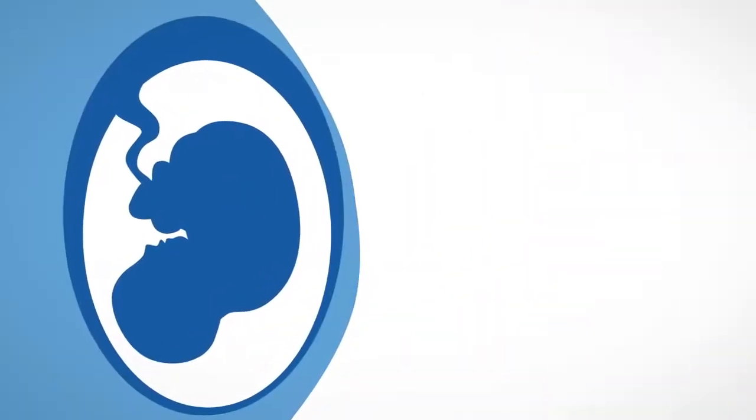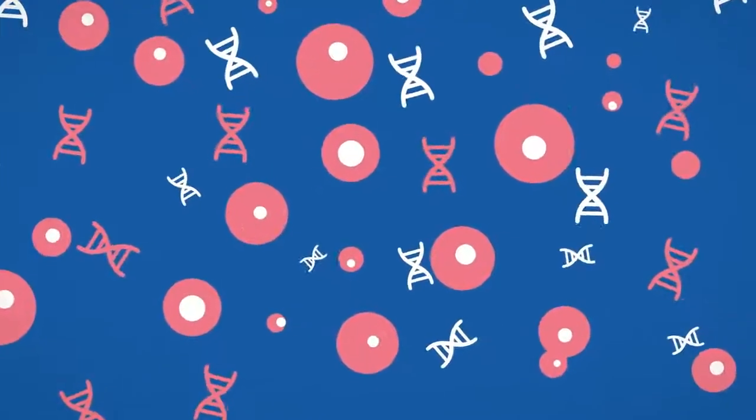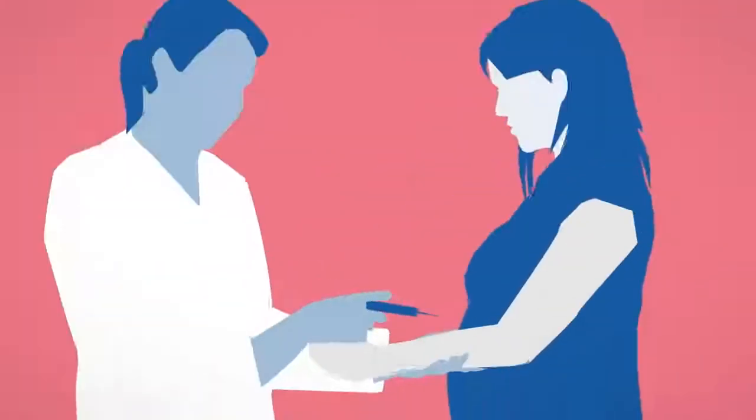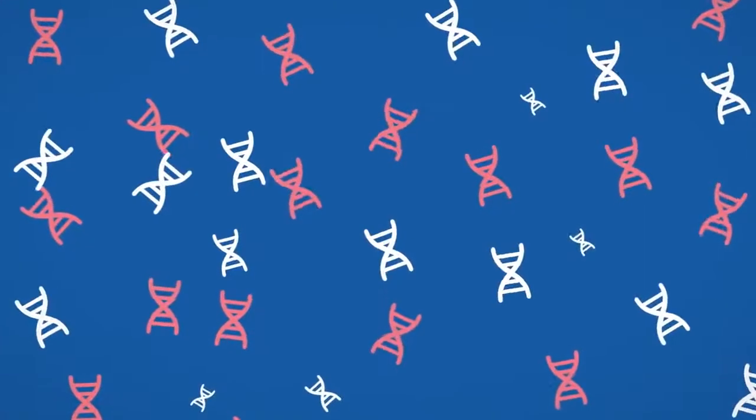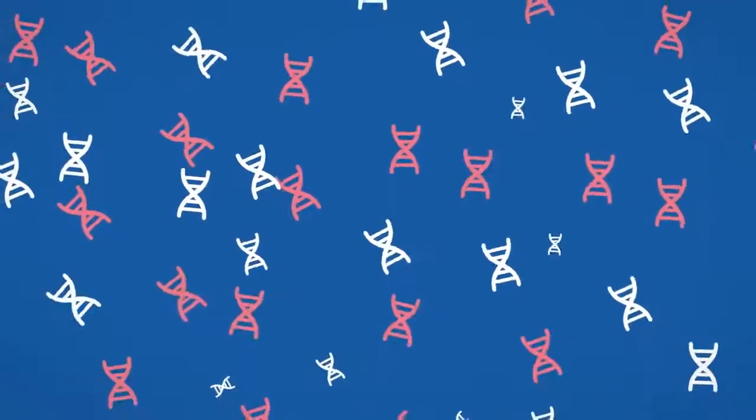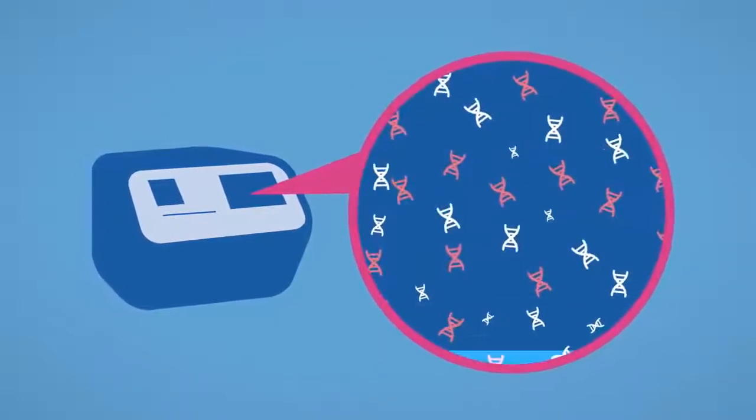So how does the Nifty Test work? Segments of DNA originating from the fetus enter the mother's bloodstream via the placenta. Therefore, all Nifty requires is a small maternal blood sample. Millions of fragments of both fetal and maternal DNA from the sample are then examined on BGI diagnostic sequencing machines.